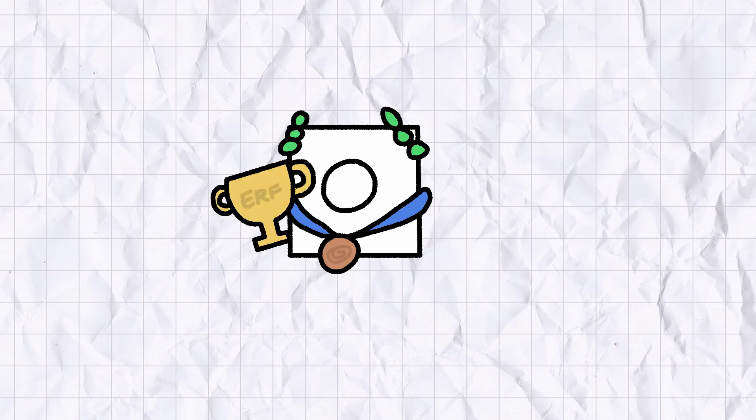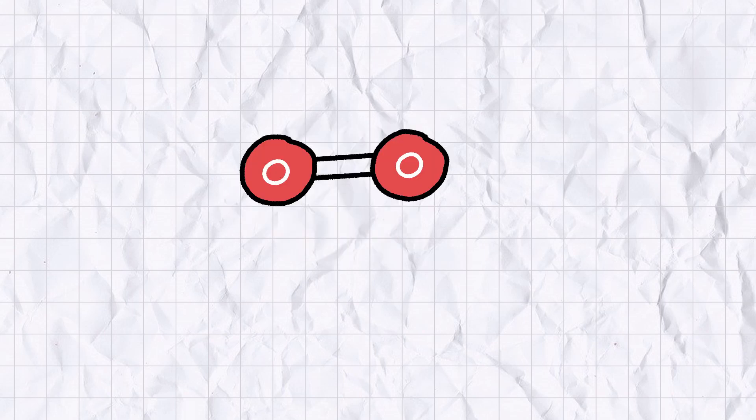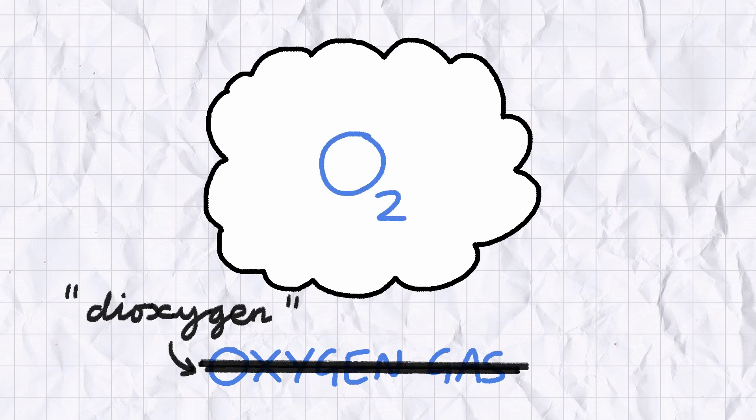Under standard conditions, oxygen atoms like to bond with each other with an oxygen-oxygen double bond. The compound that forms from this is a colorless, odorless gas called oxygen gas, or O2, or dioxygen if you want to be really posh about it.